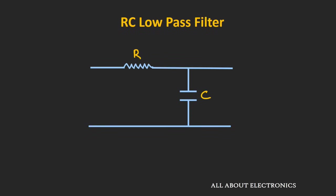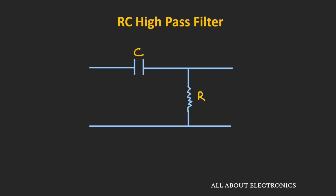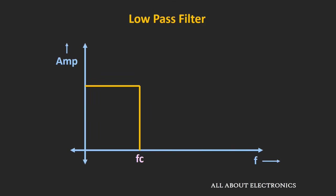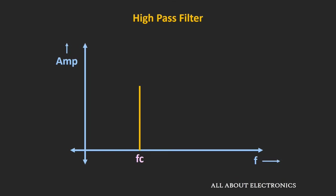In the last couple of videos, we had seen how to design the active as well as the passive low pass and the high pass filter using the resistor and the capacitor. We had seen that the low pass filter passes the low frequency components from the input signal, while the high pass filter passes the high frequency components from the input signal.